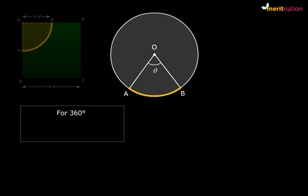So look at this figure again, a general circle. We have an arc AB. The angle it subtends at the center is theta. Now for 360 degrees, the circumference of the circle is 2πr. So for 1 degree, what would be the arc length of the sector?